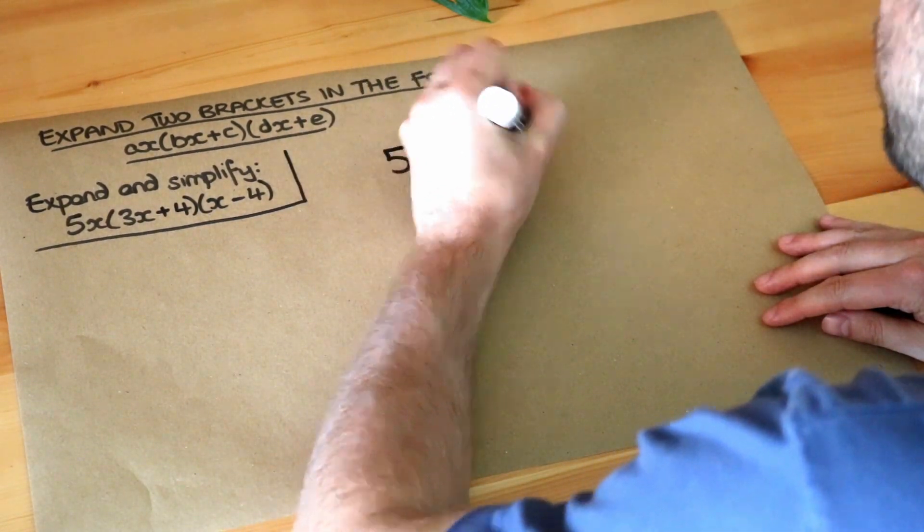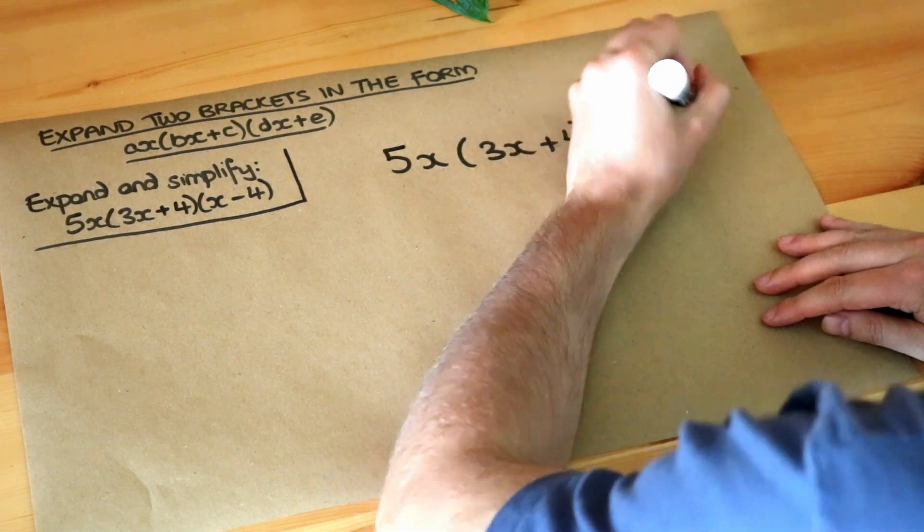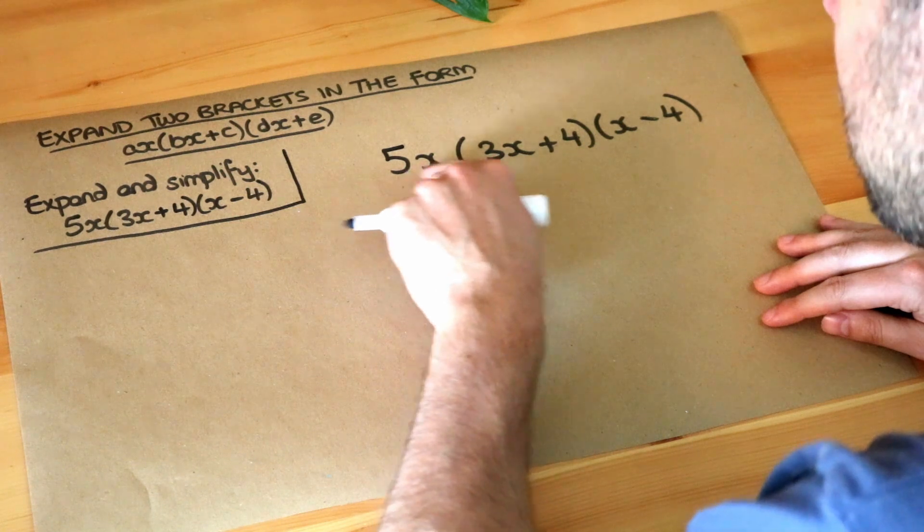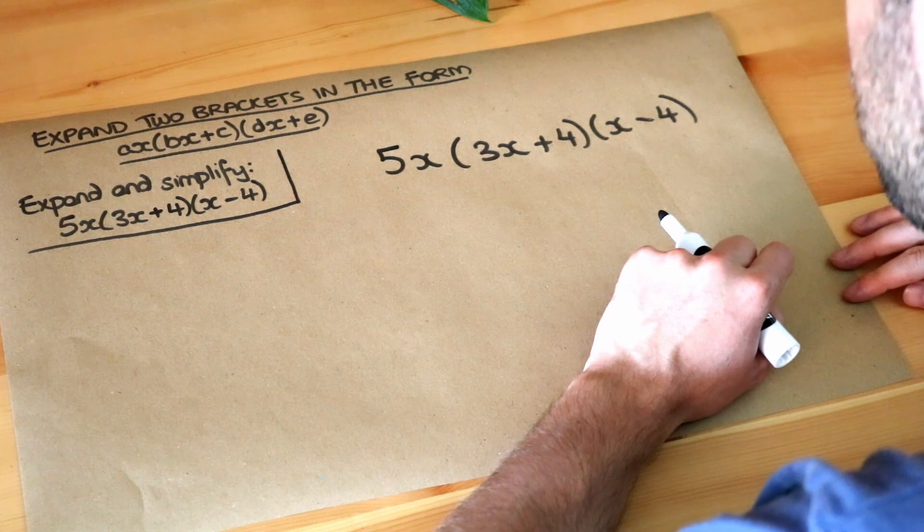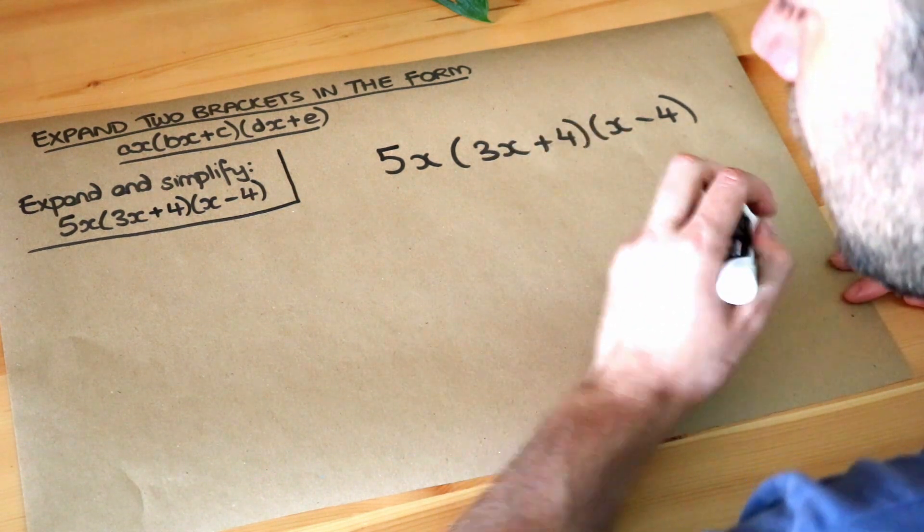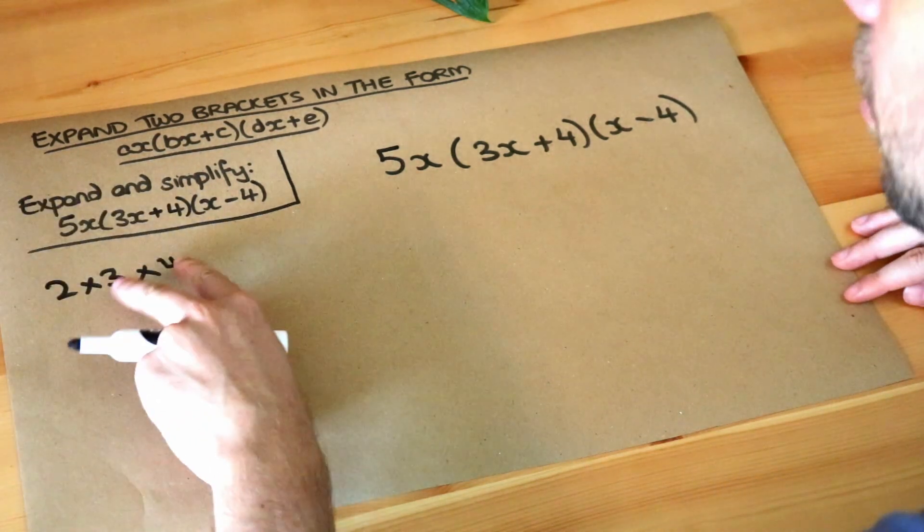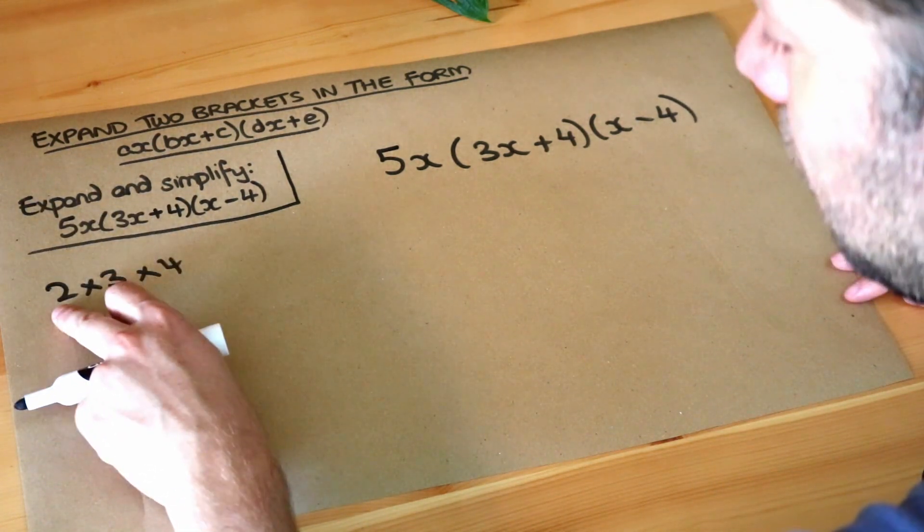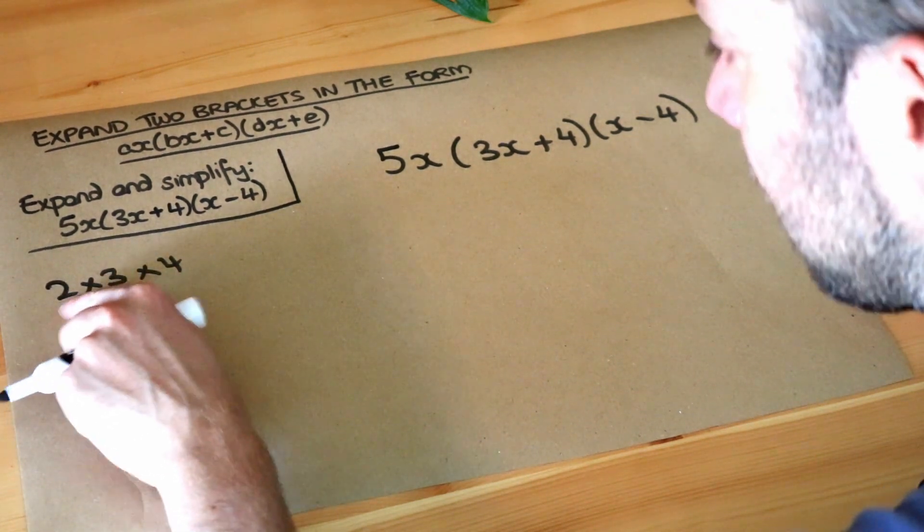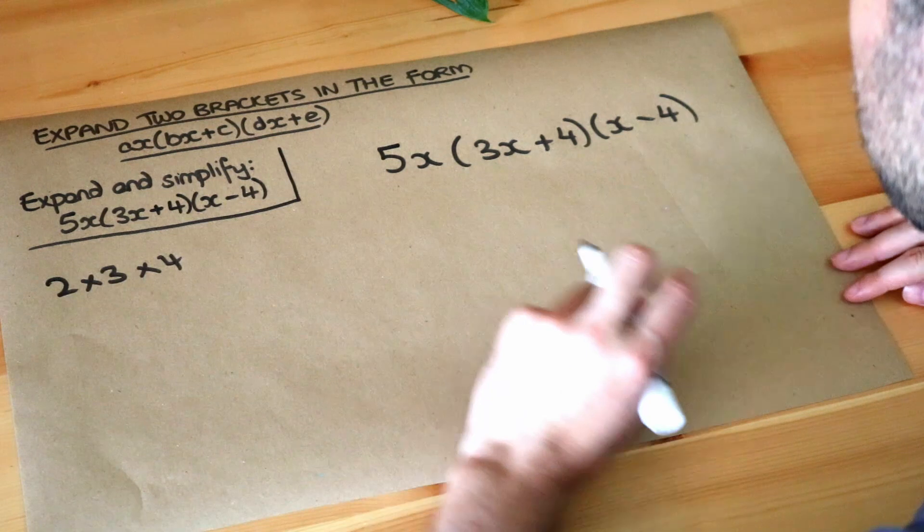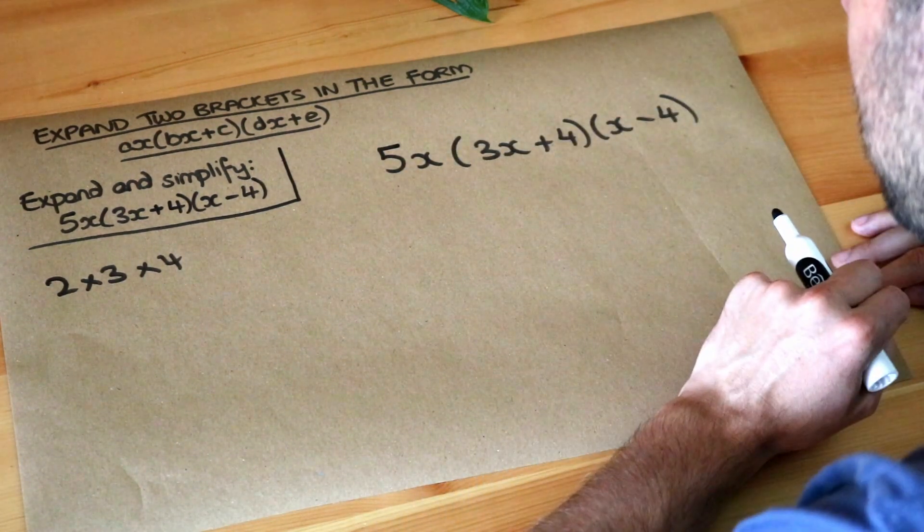Now there's more than one way of doing this. We're multiplying three things together here: the 5x multiplied by the 3x plus 4 multiplied by the x minus 4. Now when we multiply three things together, let's just say I had 2 times 3 times 4. You can multiply the 3 times 4 first, get 12, and then times it by 2. Or you can multiply the 2 by 3 first, so that's 6, and then times it by 4. It doesn't really matter. So I could do the 5x times this, or I could do these two brackets first.